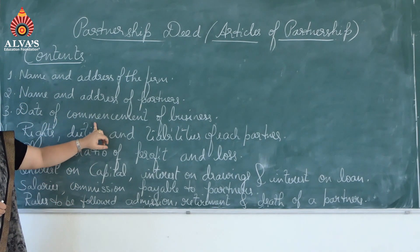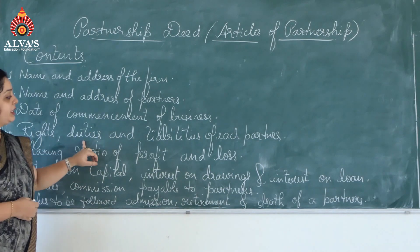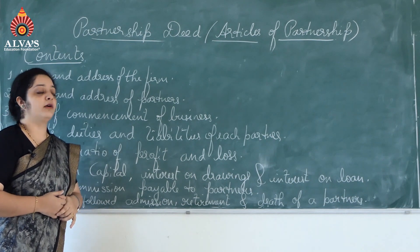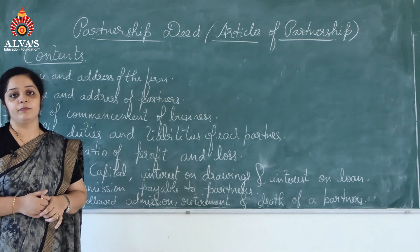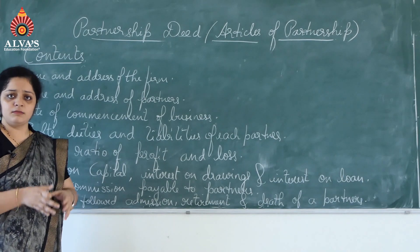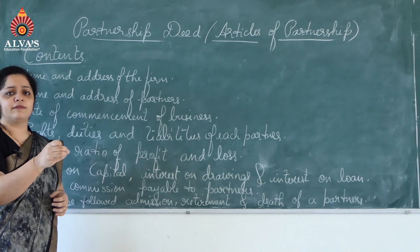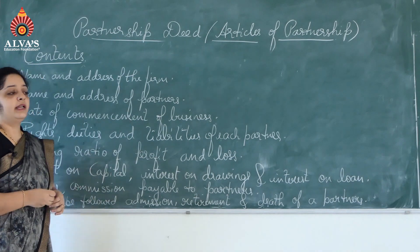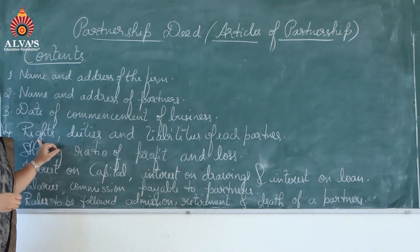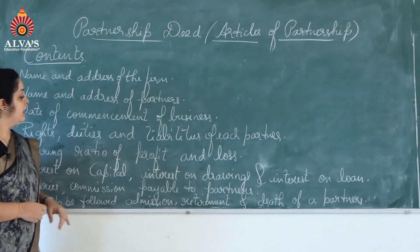Content number three is date of commencement of business. Date of commencement means date of starting — that particular date on which you started your business must be mentioned in the partnership deed. Content number four is rights, duties and responsibility of each partner. Every partner in the business will be given particular rights, responsibilities, or liabilities, and every partner's rights, duties and liabilities will be mentioned in the partnership deed.